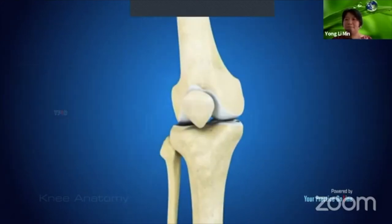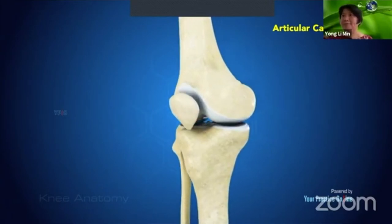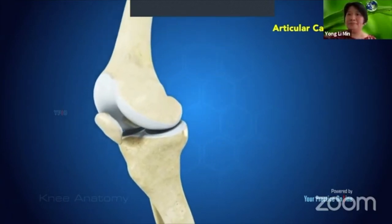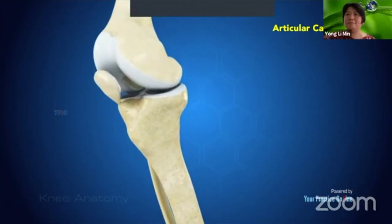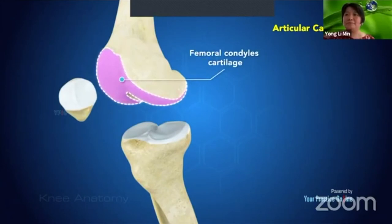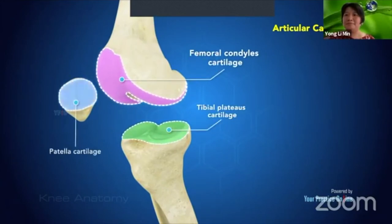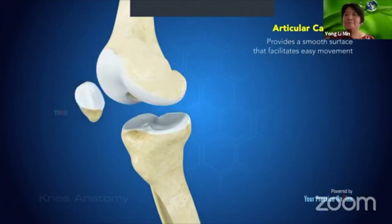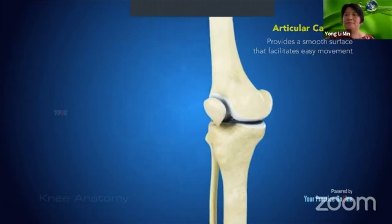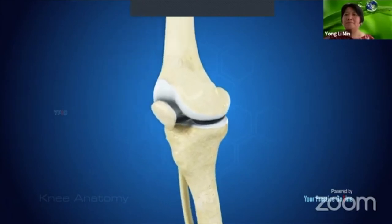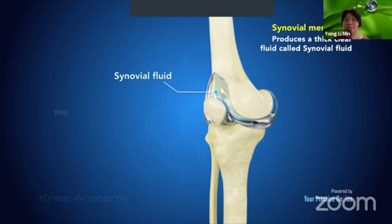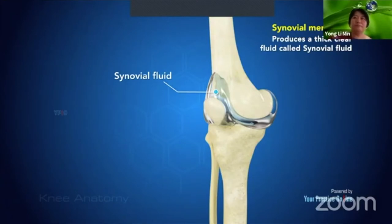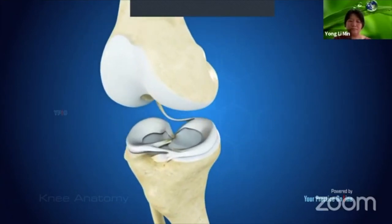To reduce friction between articulating surfaces, all surfaces involved in movement are covered with articular cartilage — a white, shiny, slippery layer. The femoral condyles, tibial plateaus, and back of the patella are covered with this cartilage. The knee joint is also lined by a synovial membrane which produces synovial fluid to lubricate and nourish the cartilage and bones.